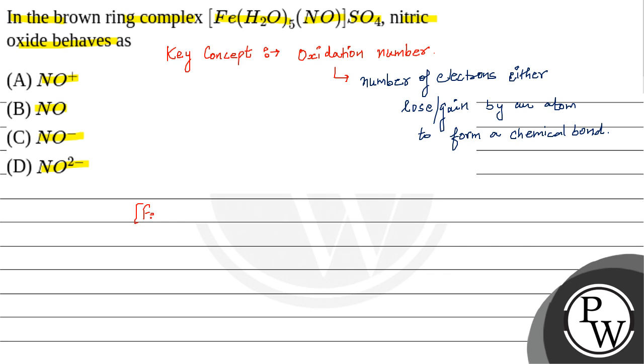It is [Fe(H2O)]5(NO)]SO4. Here SO4 has a charge of minus 2. If it is minus 2, then the overall complex will be plus 2. That means our complex is [Fe(H2O)5(NO)].